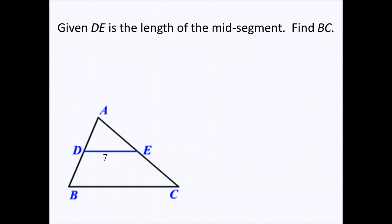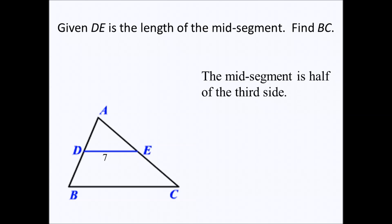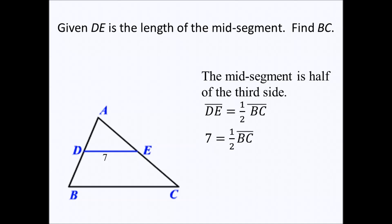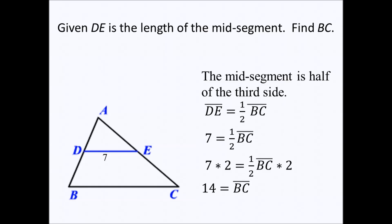Given that line segment DE is the length of the mid-segment, find line segment BC. The mid-segment is half of the third side. Therefore, line segment DE is half of line segment BC. DE equals seven, so seven equals one half BC. The next step is to multiply both sides by two: seven times two equals one half BC times two, which gives BC. Therefore, 14 equals line segment BC.